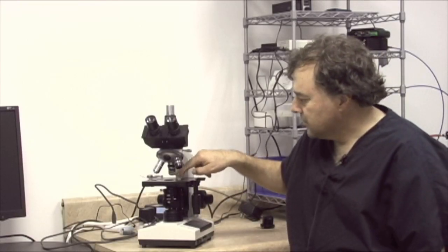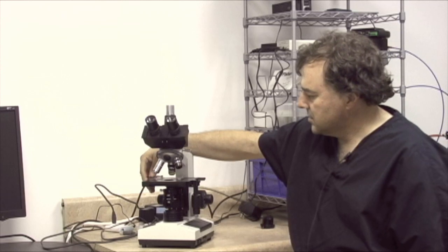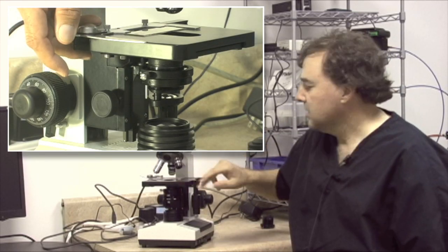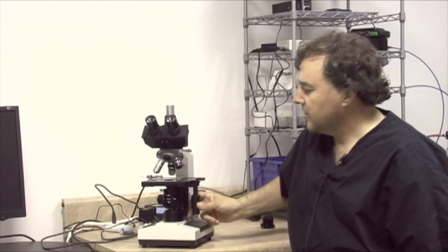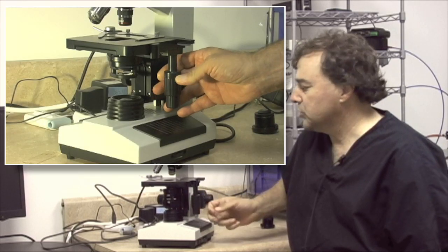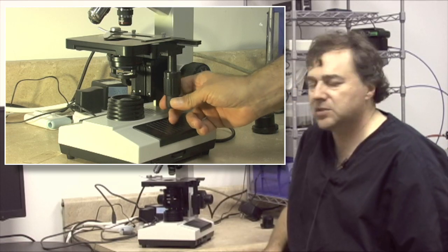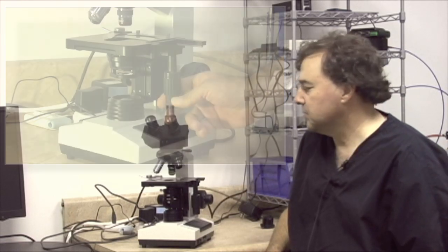The specimen sits between these two jaws on the stage. There's an XY translation mechanism which moves it back and forth, positioning the specimen beneath the objective lens.